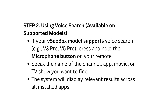Step 2: Using Voice Search. Available on supported models — if your VC Box model supports voice search, such as the V3 Pro or V5 Pro, press and hold the microphone button on your remote. Speak the name of the channel, app, movie, or TV show you want to find. The system will display relevant results across all installed apps.